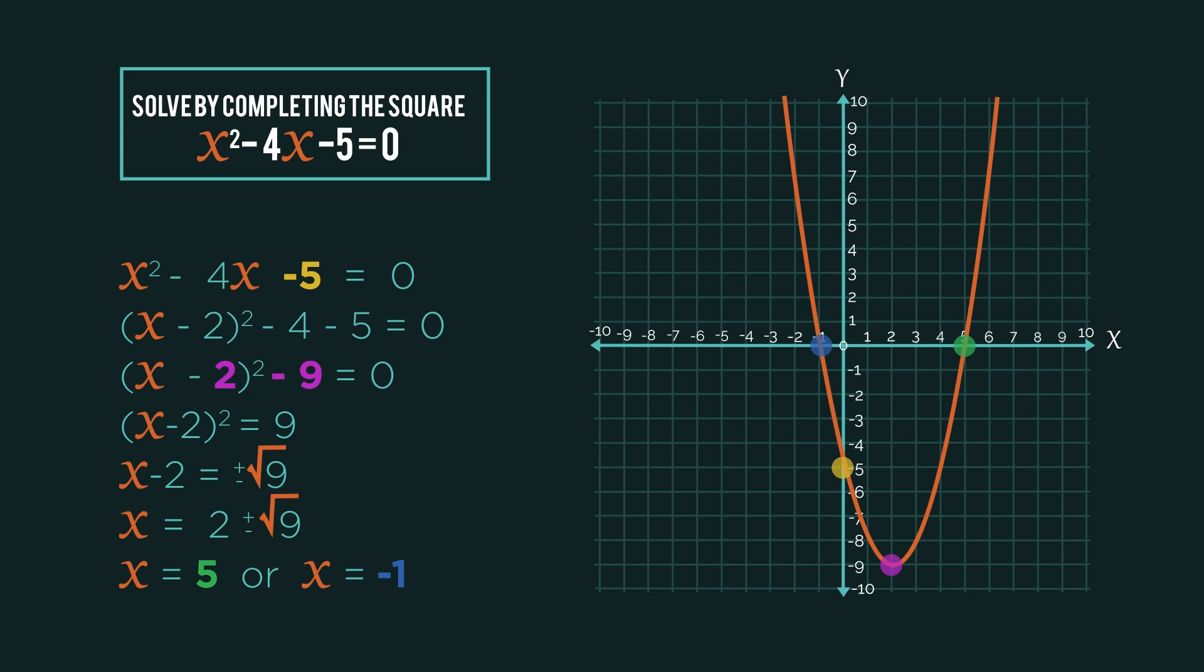But the great thing about completing the square is that the two negative nine gives us the turning point, so the minimum or maximum. This is also called the vertex. So the first number we change the sign and the second number we keep as it is. That can be a bit tricky to remember. Change the sign of the first number but keep the second the same. I've always just remembered 'second same' and that's worked for me.